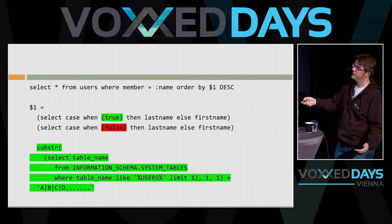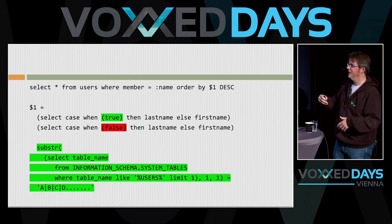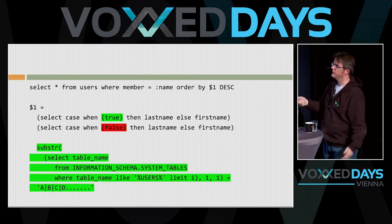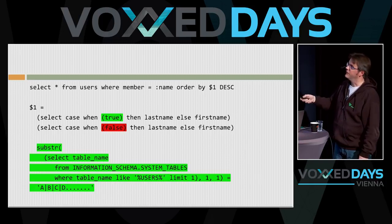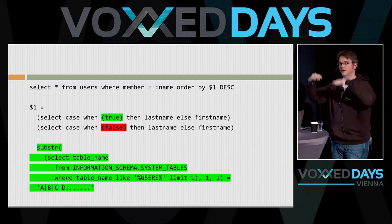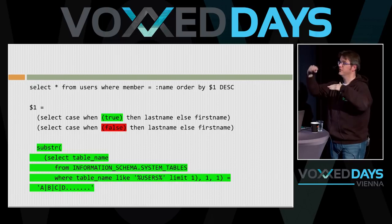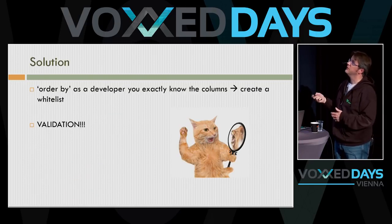Here's how a blind ORDER BY injection works: you use an expression like CASE WHEN (true) THEN last_name ELSE first_name END. So if you inject something like SUBSTRING of a table name from information_schema, and check if it starts with 'a' — if false, results sort by first name; if true, sort by last name. By observing the sort order of the website's response, you're asking the database a question and it replies with the sort order. That way you can enumerate table names character by character.